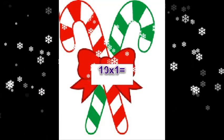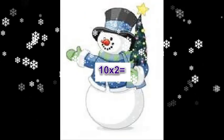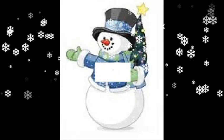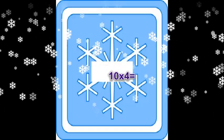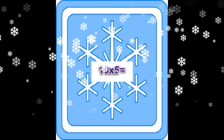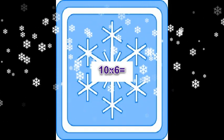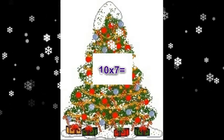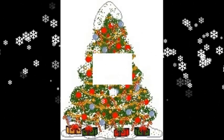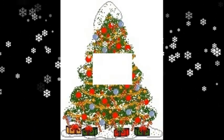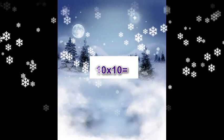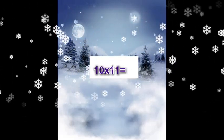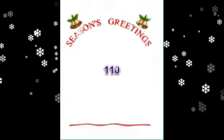Again. Ten times one equals ten. Ten times two equals twenty. Ten times three equals thirty. Ten times four equals forty. Ten times five equals fifty. Ten times six equals sixty. Ten times seven equals seventy. Ten times eight equals eighty. Ten times nine equals ninety. Ten times ten equals one hundred. Ten times eleven equals one hundred ten. Ten times twelve equals one hundred twenty.